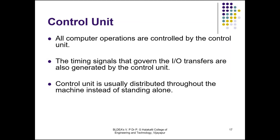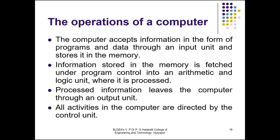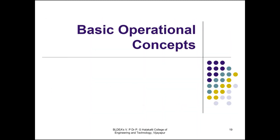In summary, the computer accepts information in the form of programs and data through an input unit and stores it in memory. Information stored in memory is fetched under program control into the ALU where it is processed, and processed information leaves the computer through an output unit. All activities are directed by the control unit. In the next class we will see basic operations concepts — till then, go through the textbook. Thank you.